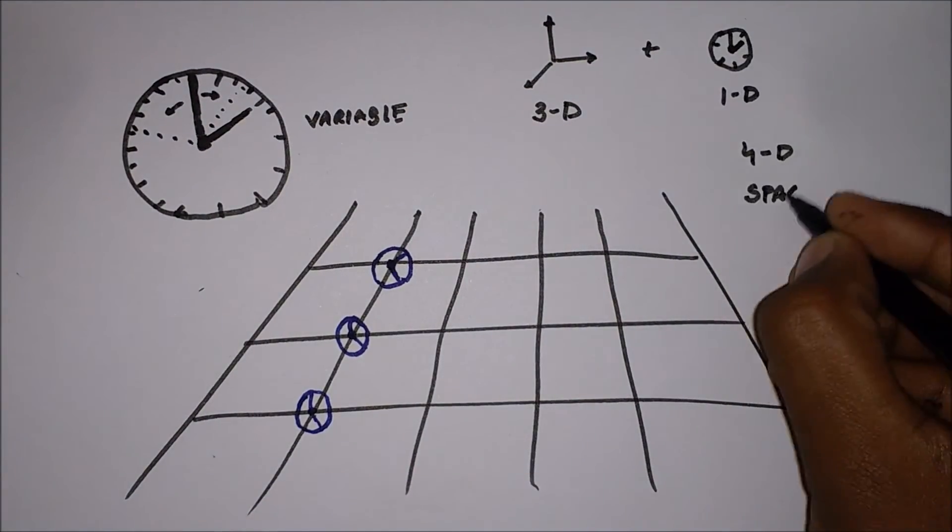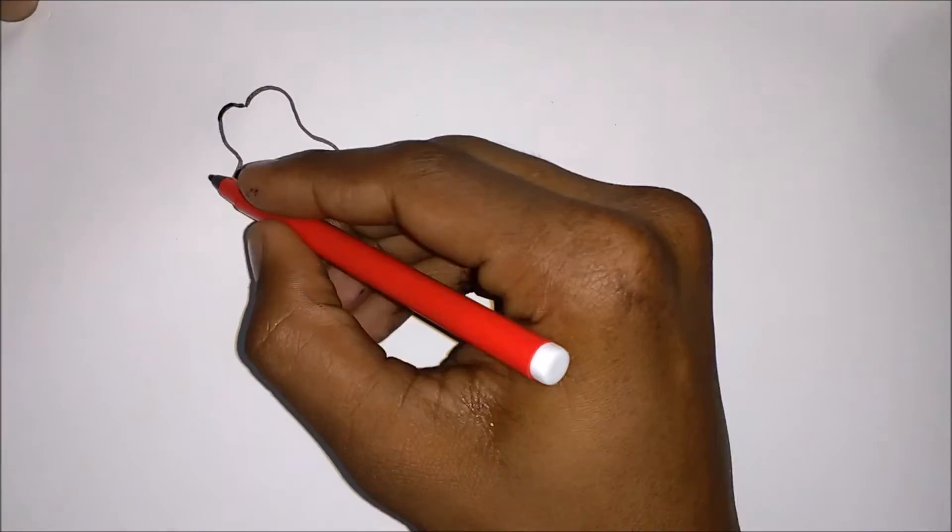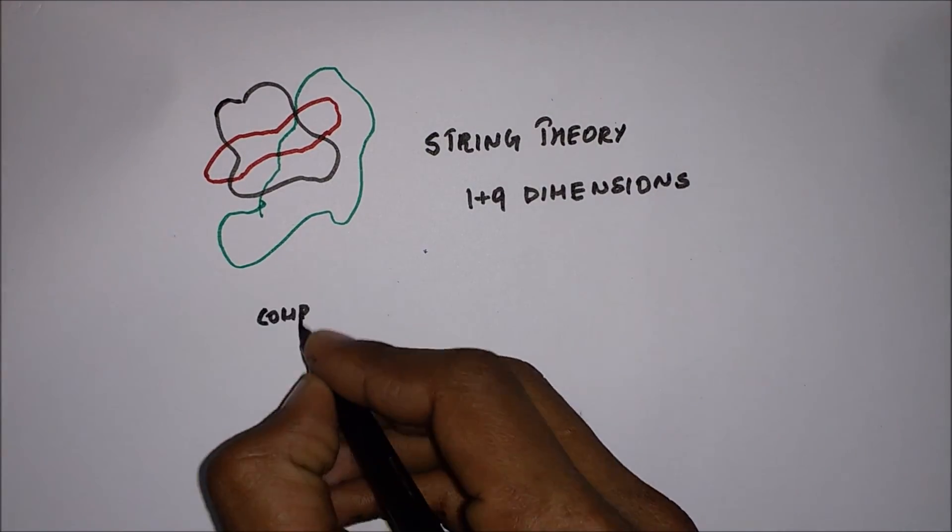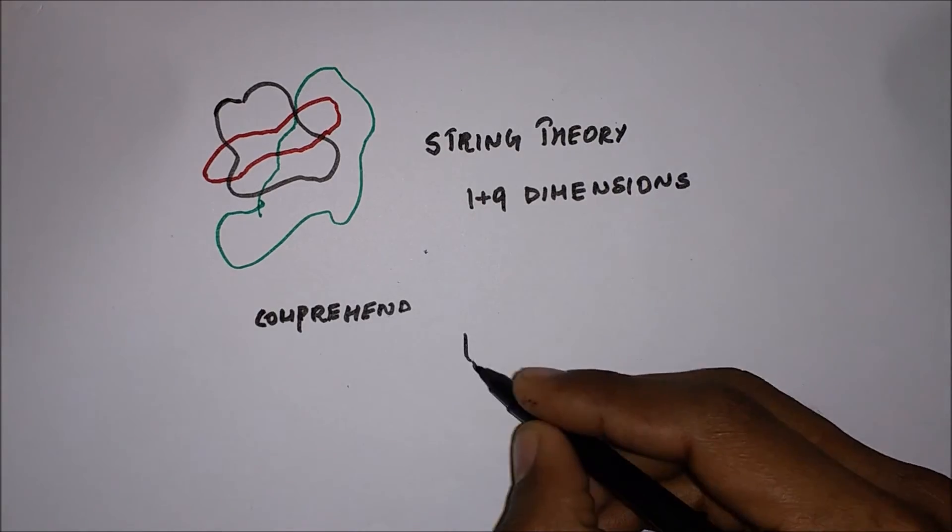Then came the string theory. The string theory predicts a staggering 1 plus 9 dimensional spacetime, which we are unable to comprehend with our current level of intuition, as we have no experience in perceiving these dimensions.